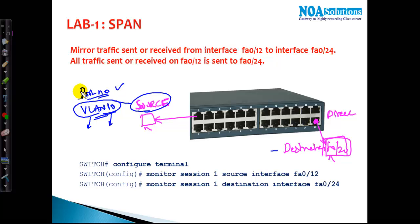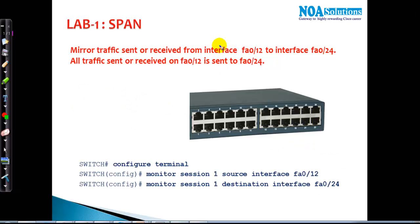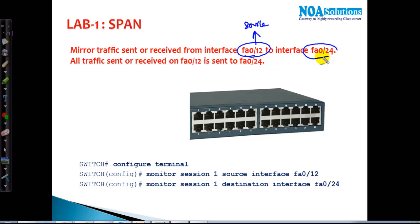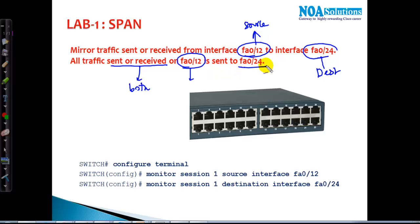In this lab scenario, the source will be F0/12 — from where we get the traffic — and the destination will be F0/24. All traffic sent and received — meaning both TX and RX — from F0/12 should be sent to F0/24.